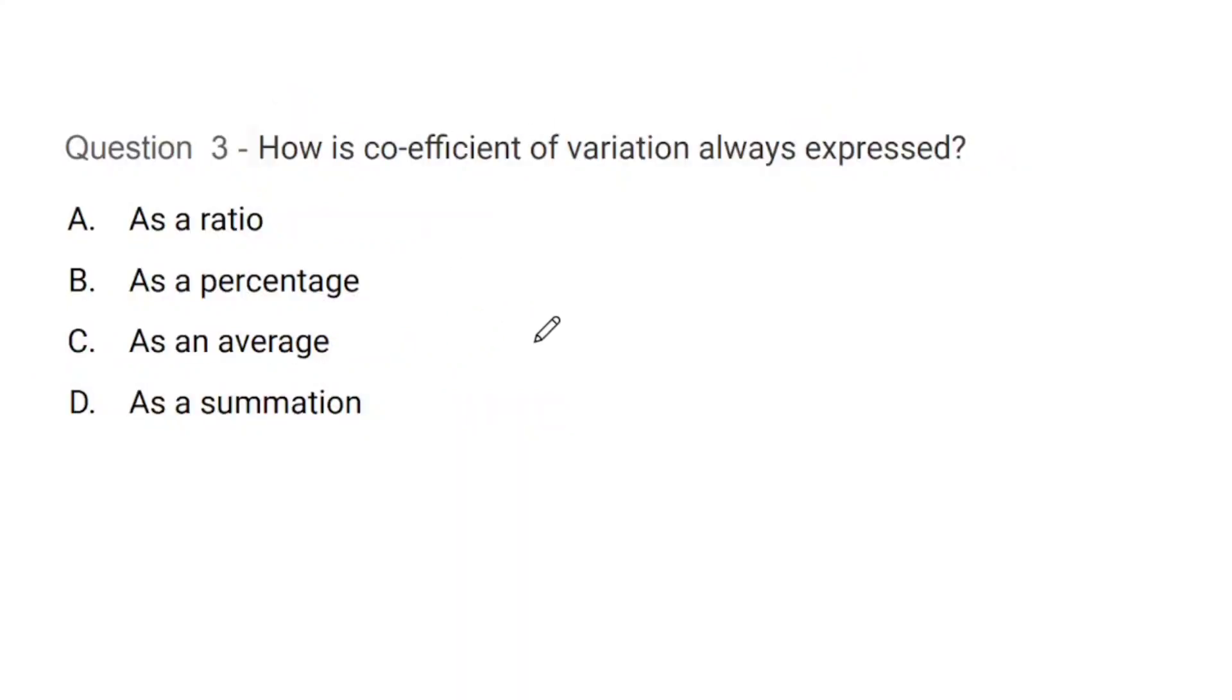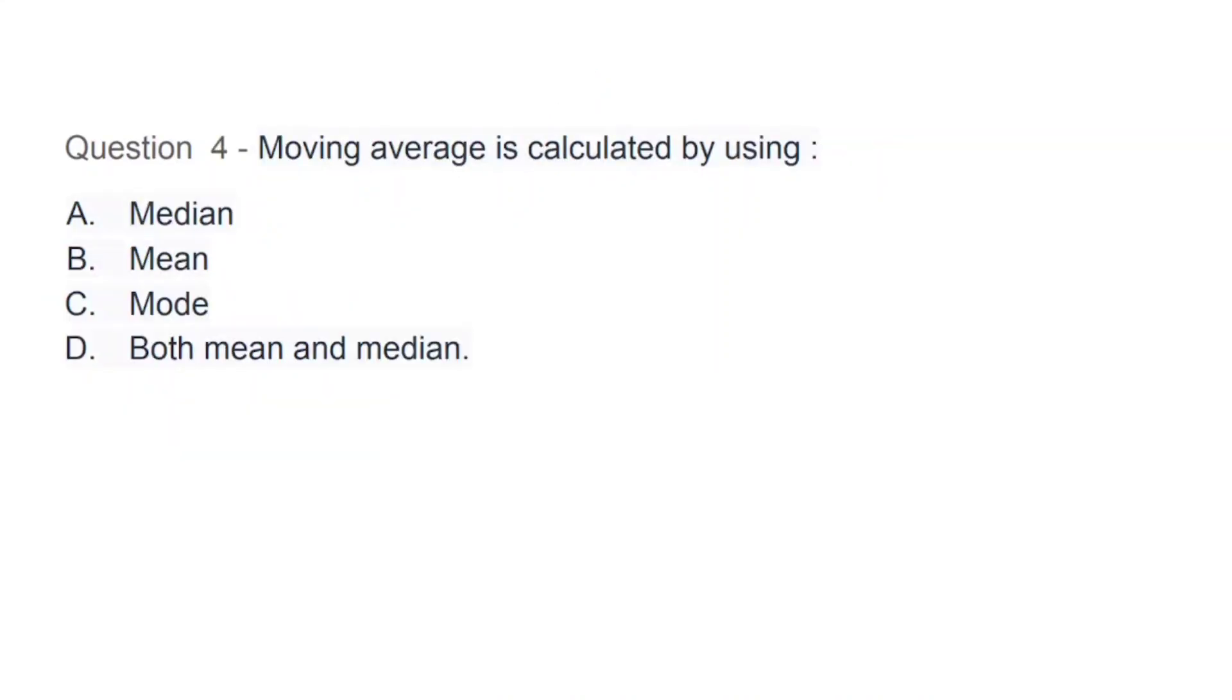Question number 3: How is coefficient of variation always expressed? As a ratio, as a percentage, as an average, or as a summation. The correct answer is B, that is percentage.